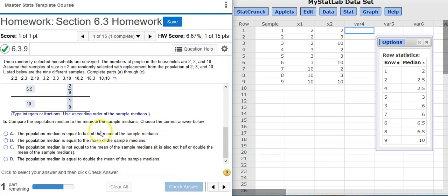Now part B asks, compare the population median to the mean of the sample medians. Choose the correct answer below. Okay, so the first thing we need to do is find the population median and the mean of the sample medians so that we can compare them.